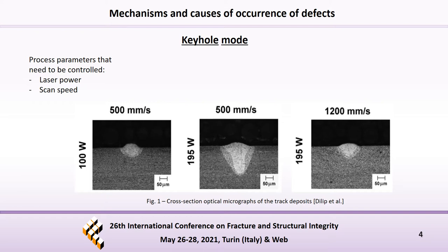The main question is: why do these defects appear? There are several reasons. First of all, there is a physical phenomenon called keyhole mode, and in this case the process parameters that need to be considered are laser power and scan speed. During melting with a high intensity heat source and lower speeds, the melt pool is very penetrative as shown in the second figure. This is due to the transition from conduction mode, visible in the first picture, to keyhole mode, visible in the second picture.